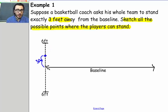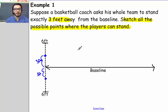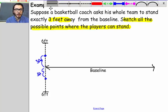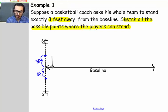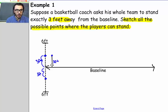A player can also stand right over here on the other side of the baseline — you'll also be 3 feet away, so that's also 3 feet. But is that it? What about if I were to draw a line from here to here and that measures 3 feet? Couldn't a player also stand right over here? You're 3 feet away from the baseline. Why can't he stand there? Well, the answer is yes, he can stand there.